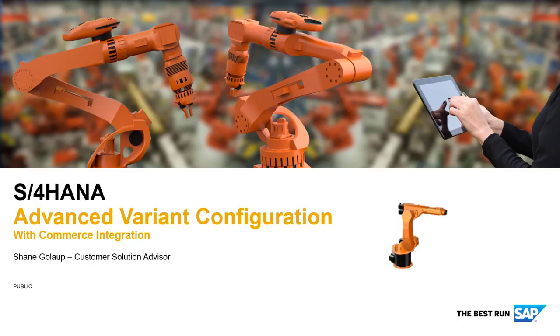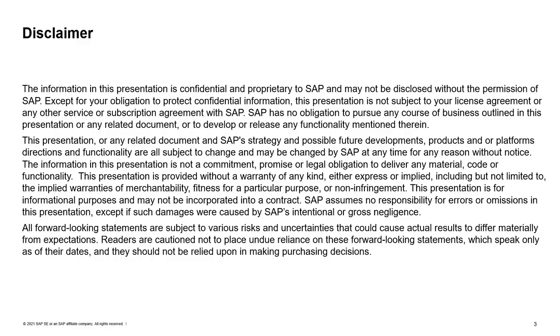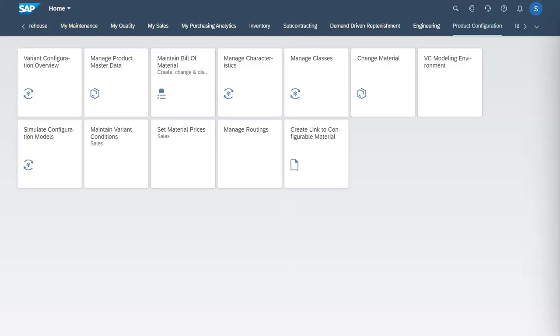This is a demonstration of S4HANA Advanced Variant Configuration with Commerce Integration. Let's first look at some of the integration setup of the robot that we'll be manufacturing.